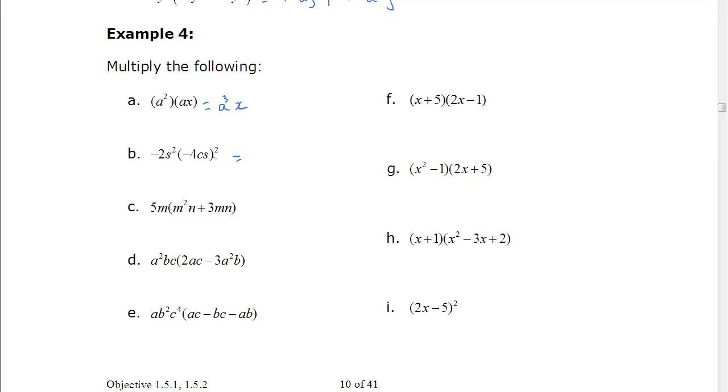In b, make sure you square this bracket first. So we'll write that in two steps. Square it. It becomes 16c squared s squared. And then we can multiply them together to get the final answer. We're going to bring this piece in with both parts to give us the answer, which is 5m cubed n plus 15m squared n.